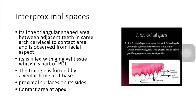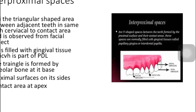Now we have interproximal spaces. Interproximal spaces are triangular-shaped areas between adjacent teeth in the same arch, cervical to the contact area, as observed from the facial aspect. The interproximal spaces are usually triangular in shape between two adjacent teeth in the same arch. They are normally filled with gingival tissue, which is part of the periodontal ligaments. The alveolar bone is at the base of the triangle, the proximal surfaces are on its sides, and the contact area is at the apex, as we can see in the diagram.